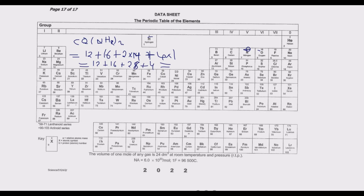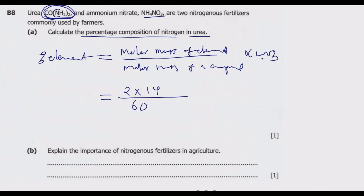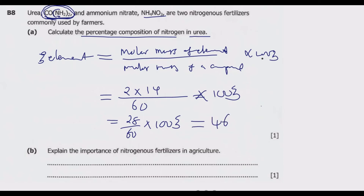Adding 12 + 16 + 28 + 4 gives us 60. So the molar mass of urea is 60. The percentage composition of nitrogen is therefore 28 over 60 multiplied by 100 percent, which gives 46.70 percent. That is the answer.